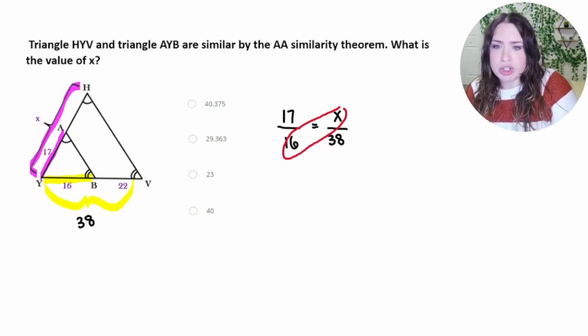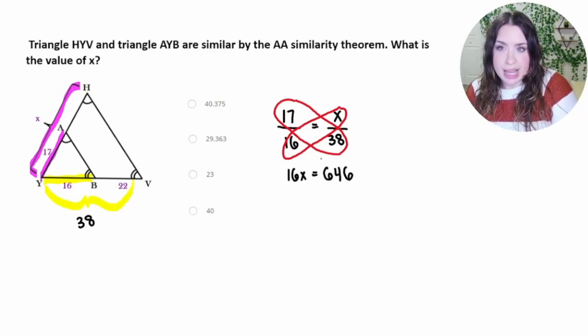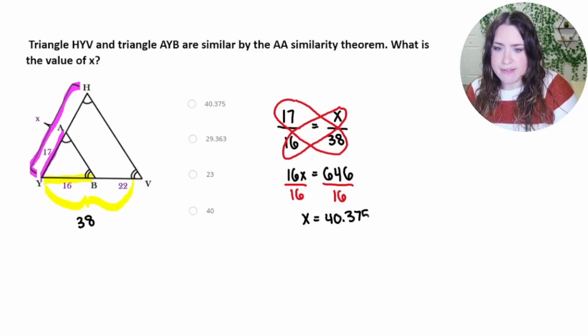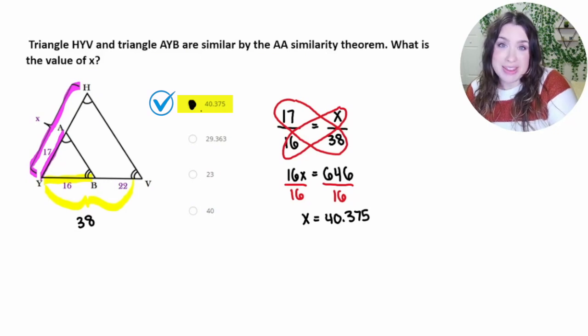We're going to use cross multiplication. So I'm going to do 16 times X to get 16X. And then I'm going to do the cross product the other way, 17 times 38. Definitely use that calculator. And we get 646. Now, to get X by itself, I'm going to divide both sides of the equation by 16. Again, use that calculator and we get that X is equal to 40.375, which is the answer right there.